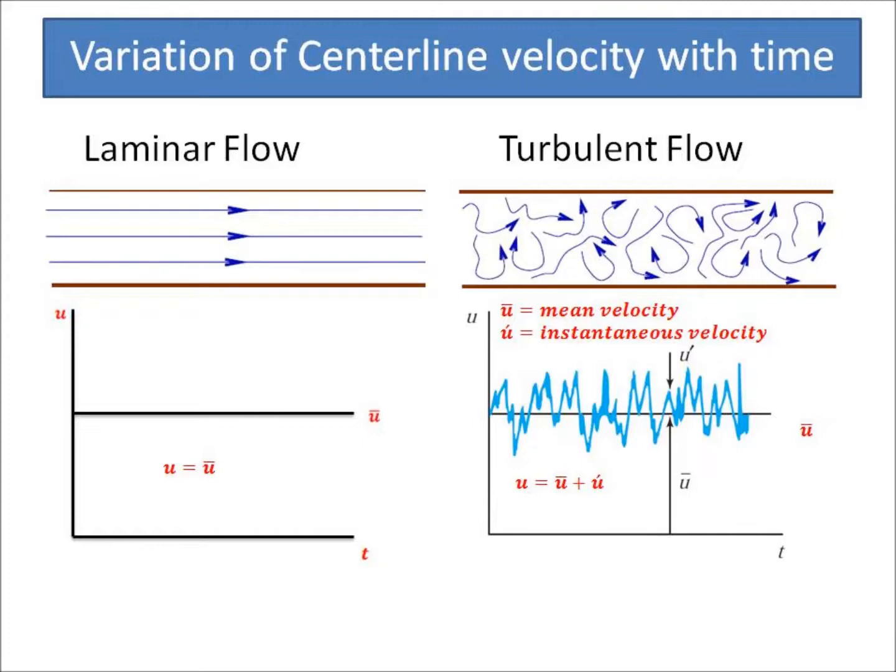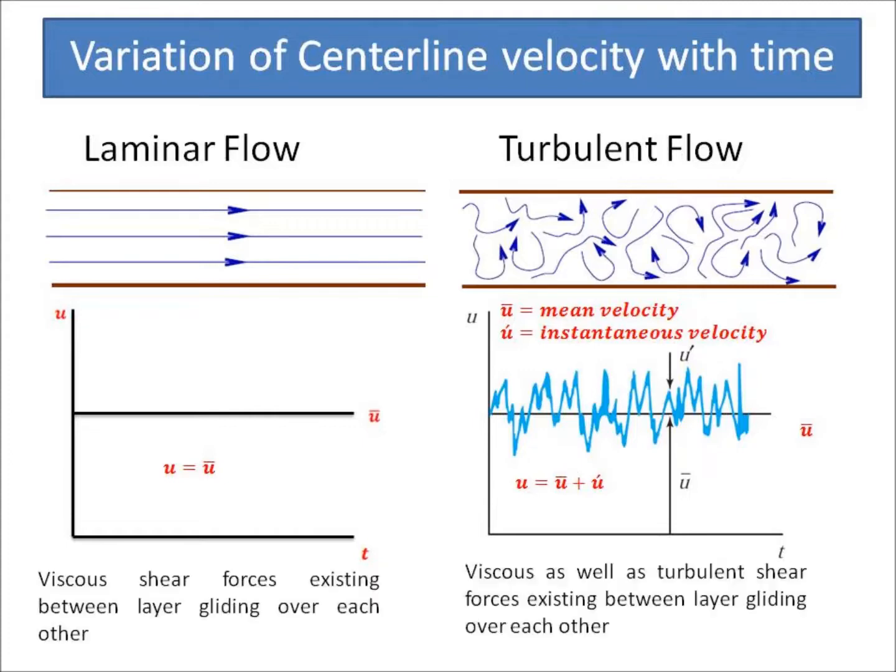For the turbulent flow, the velocity is always the sum of mean velocity and the instantaneous velocity variation, that is u = ū + u'. Hence for laminar flow, the viscous forces exist in the entire flow field, while for the turbulent flow, viscous shear forces and turbulent forces are dominant.